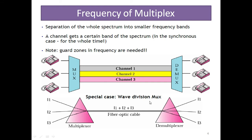In the special case of wave division multiplexing (WDM), this is used for optical fiber communication systems — a specific wavelength of the signal is allocated a frequency and assigned to a specific user. This special case is called wave division multiplexing, WDM.